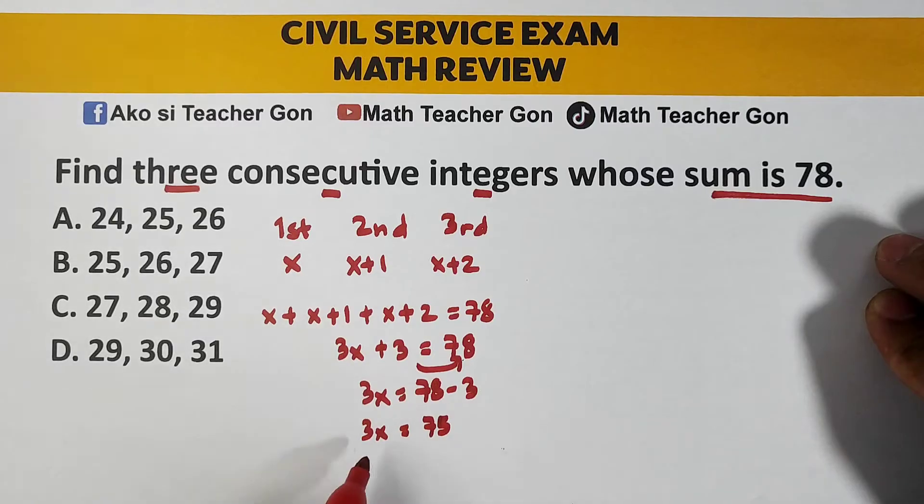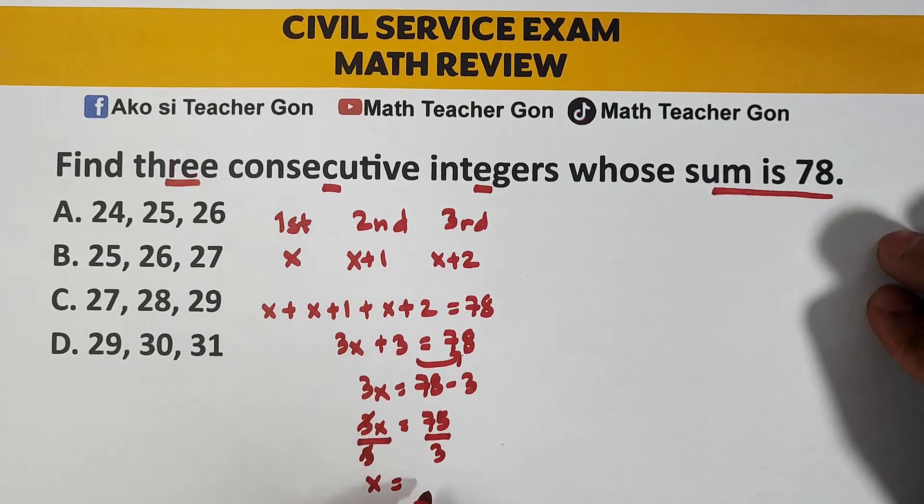Kailangan natin makuha yung value ng x, divide both sides by 3, cancel, cancel. Your x is equal to, as you can see, this is 25.